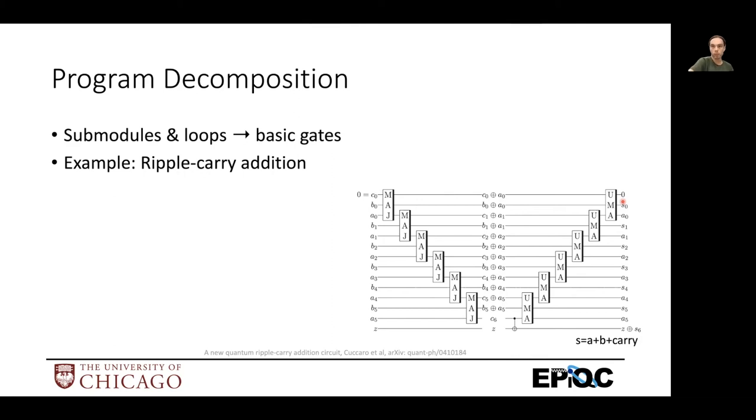So there's many ways to implement this. This is a Draper adder. And the way it's described in the 2004 paper is you do these majority operations in this sequence, and then these unmajority and add operations in this sequence. And that adds two numbers. So to actually implement this, we need to know what each of these sub circuits does.